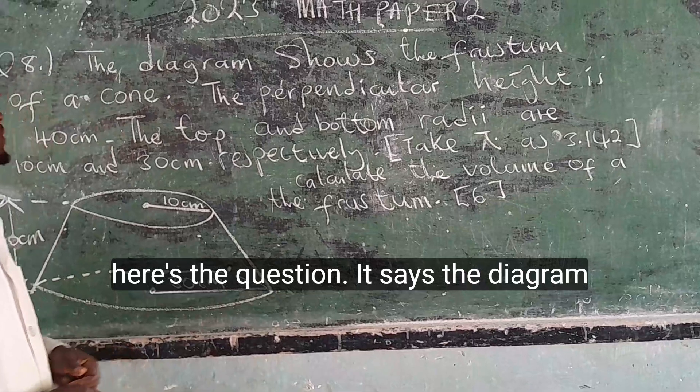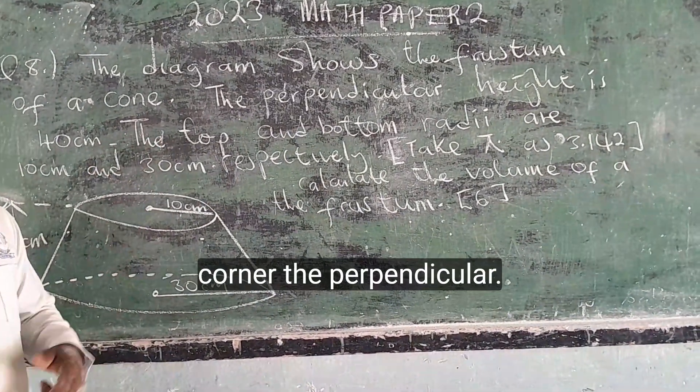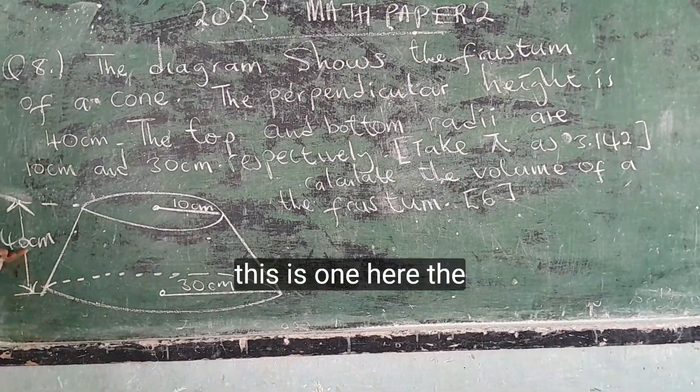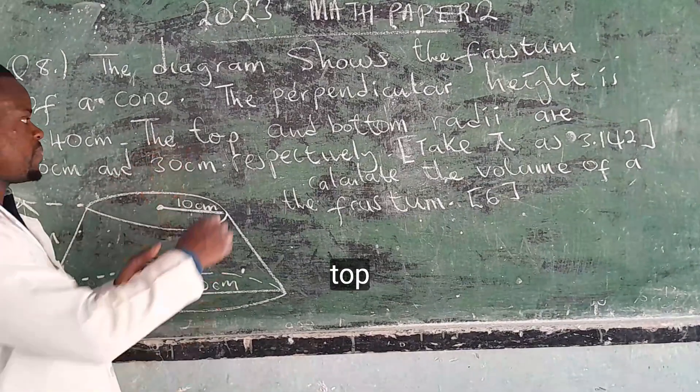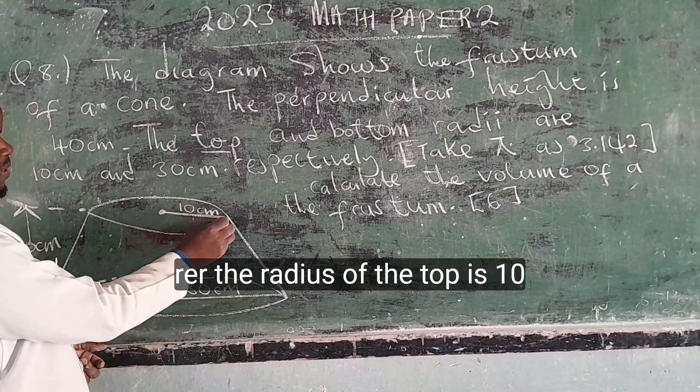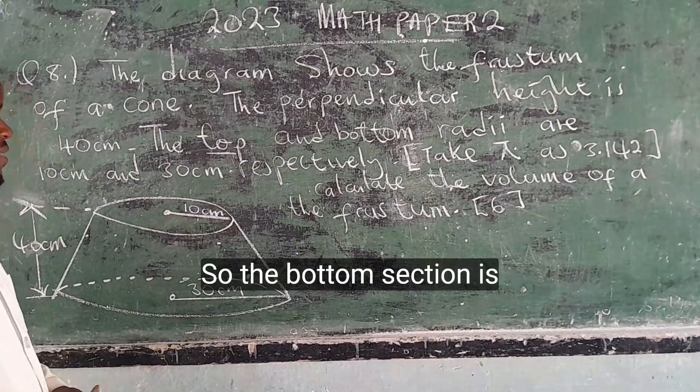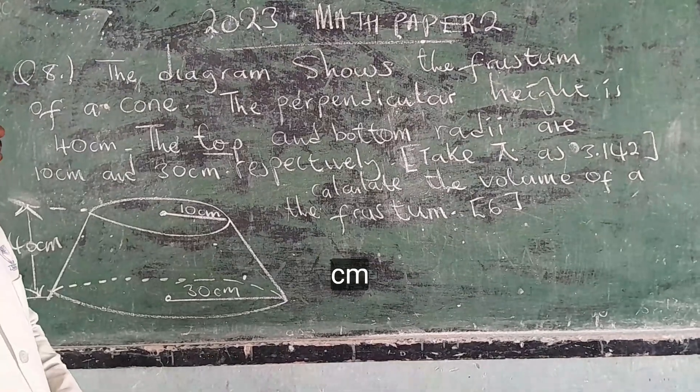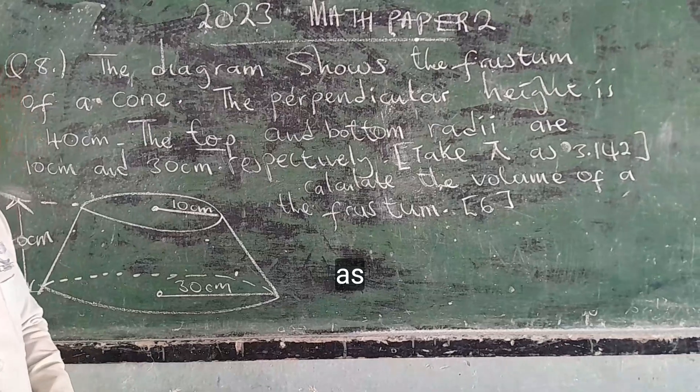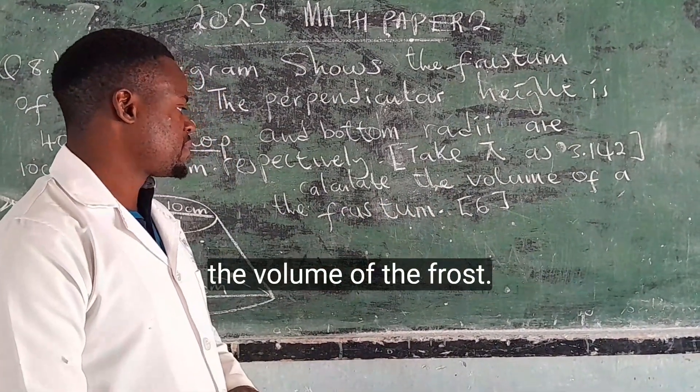So here's the question. The diagram shows the frustum of a cone, the perpendicular height 40 centimeters. This is one here. The top, that's the top, and bottom radii. The radius of the top is 10 centimeters. The radius of the bottom section is 30 centimeters, respectively. Take pi as 3.142. Calculate the volume of the frustum.